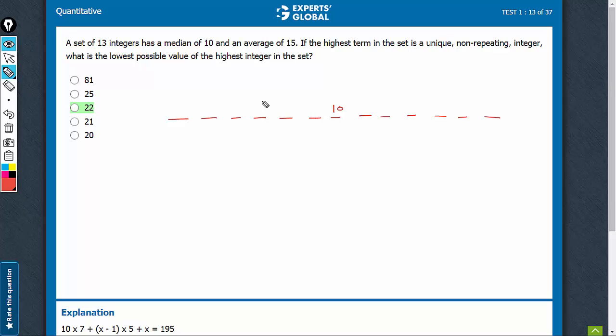This is 10, and the average is 15. Total is 13 × 15, 195. It is saying that x is a unique, non-repeating integer. We have to find the lowest possible value of x. We have to minimize this.